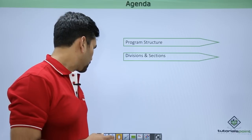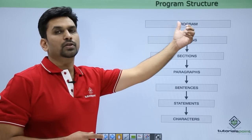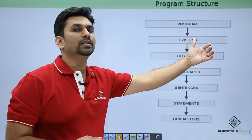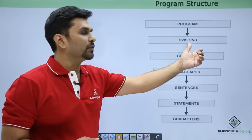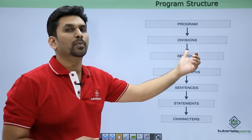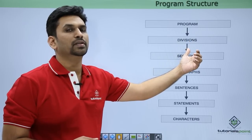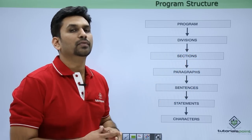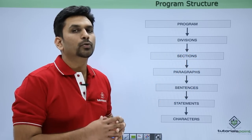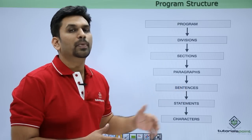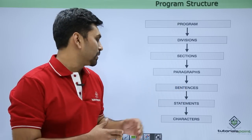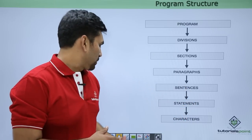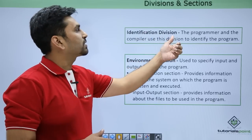This is the structure of a COBOL program. Inside a program we have divisions — there are four divisions. Inside divisions we have sections, some defined by COBOL and some user-defined. Inside sections we have paragraphs, which are user-defined and need to be coded. Then we have sentences, and further we have statements and characters to form the sentences.